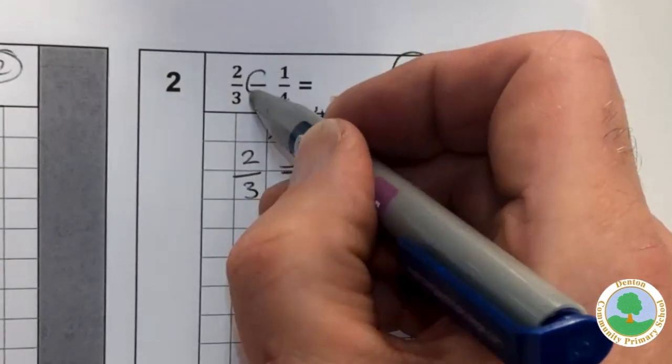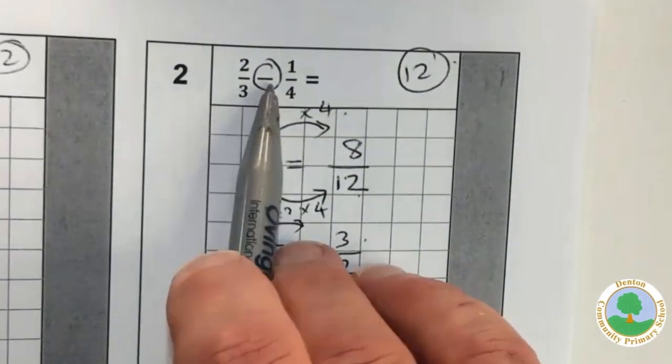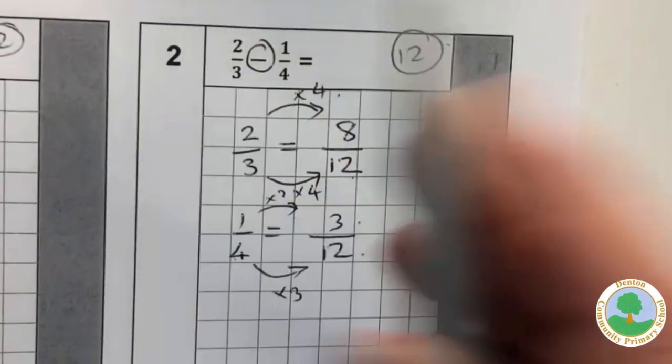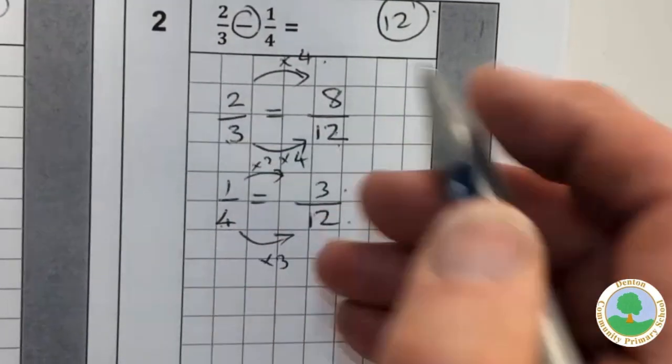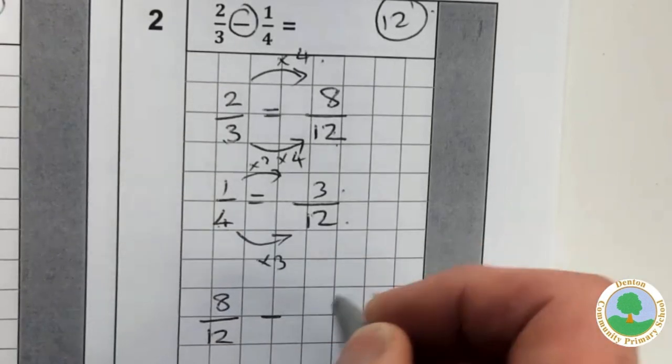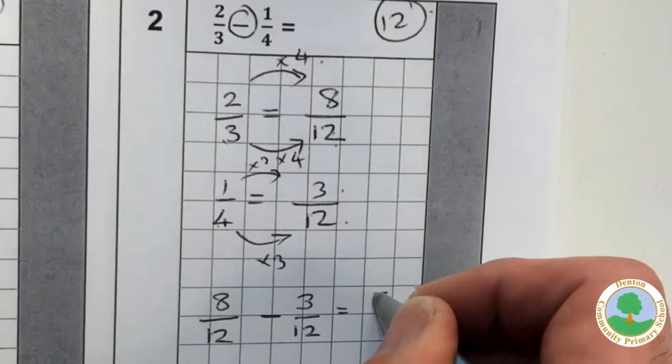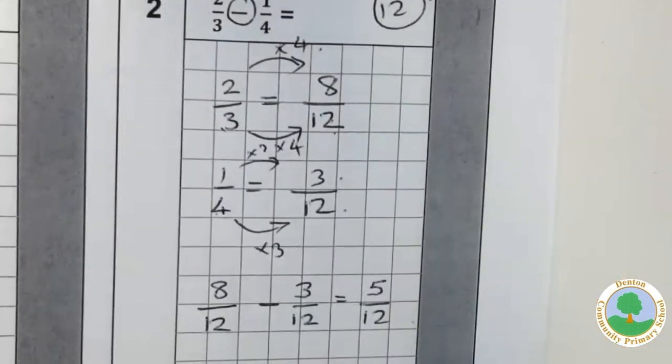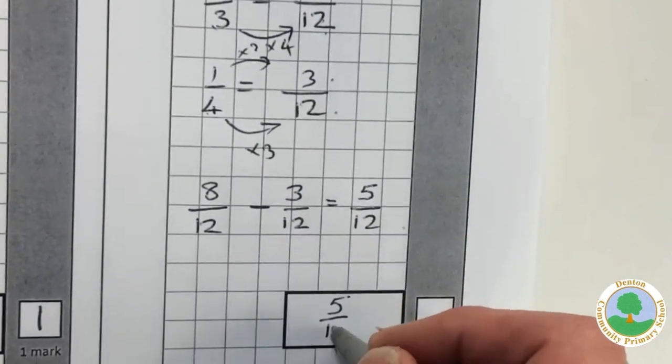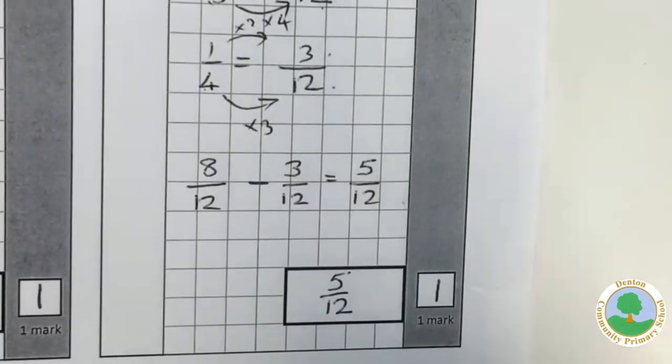Just be careful that it's a subtraction this time. Don't do all the hard work and then fail to notice whether it's addition or subtraction. So two thirds minus a quarter is the same as eight twelfths minus three twelfths. And eight of anything, take away three of it, is five of it. So there we go, five twelfths. Again, no simplifying possible, so we get ourselves a mark.